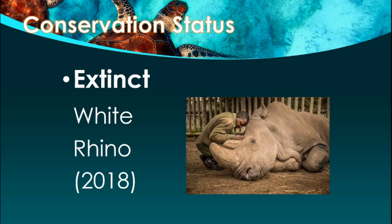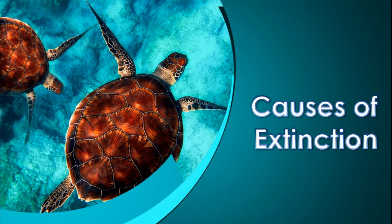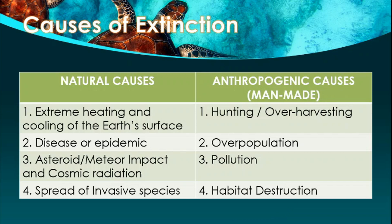What caused the extinction of these species? The causes of extinction can be classified into two: natural causes and anthropogenic causes — referring to man-made causes. Natural causes include: extreme heating and cooling of the earth's surface, disease or epidemic, asteroid or meteor impact and cosmic radiation, and the spread of invasive species. Anthropogenic causes include: hunting or over-harvesting, overpopulation, pollution, and habitat destruction.